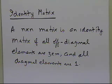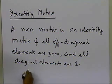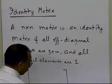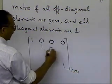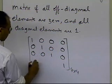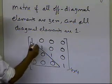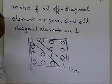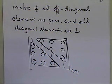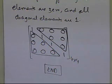You cannot have anything on the diagonal elements other than 1 — no 0s, no minus 1s, no minus 2s or anything like that. All the diagonal elements have to be 1. That's what we call an identity matrix. A typical example: a 4 by 4 identity matrix has all diagonal elements equal to 1, and all off-diagonal elements — both below and above the diagonal — equal to 0. That's the end of this segment. Thank you.